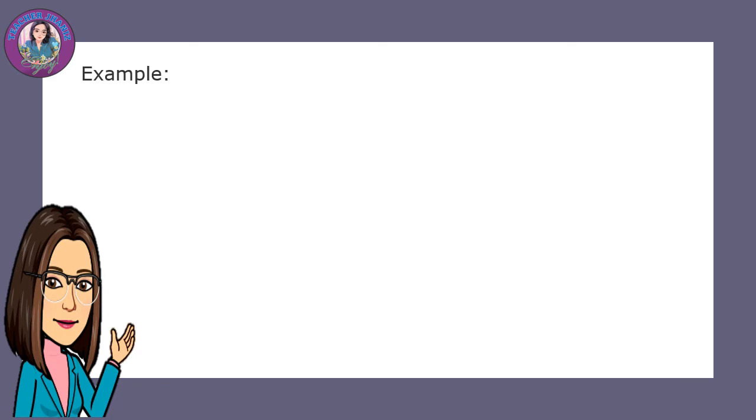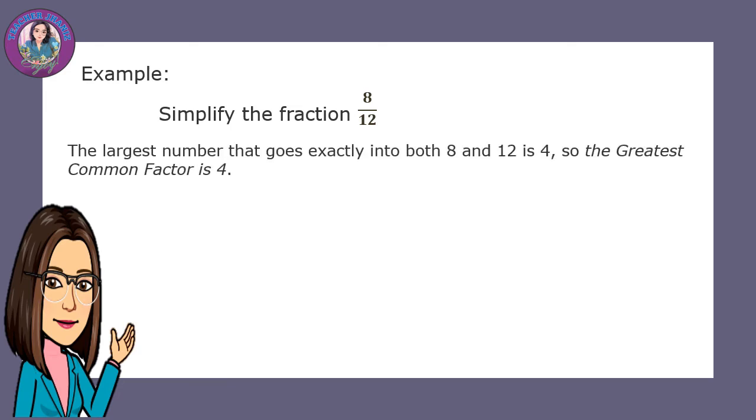Example: Simplify the fraction 8 over 12. The largest number that goes exactly into both 8 and 12 is 4, so the greatest common factor is 4. Divide the numerator and denominator by 4.